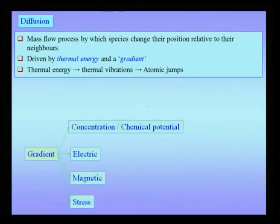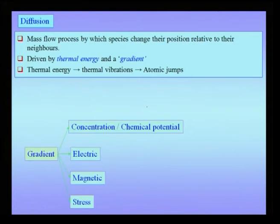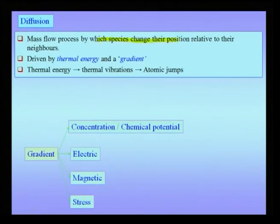We are now in a position to define what diffusion is and ask: when would diffusion occur, what are the relevant parameters which control diffusion, and what are the underlying mechanisms which give rise to diffusion? A basic definition of diffusion is: it is a mass flow process by which species change their position relative to their neighbors. Flow of water downstream in a river is not called diffusion — that is simple flow. But when atomic species in the current context move relative to their neighbors, such a process driven by gradients is called diffusion.